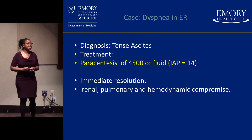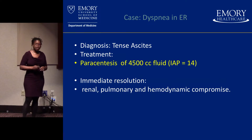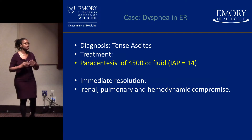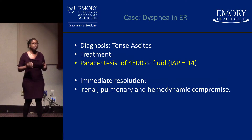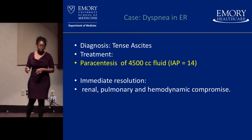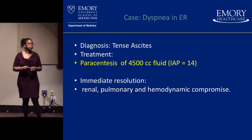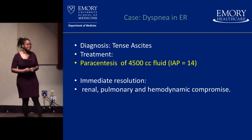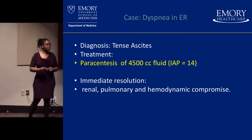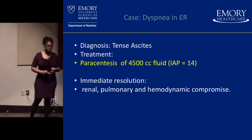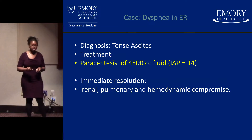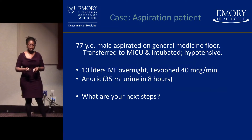This person has tense ascites. What is the treatment? A paracentesis. Let's get that fluid off — let's try to remove that extra pressure. We have a problem, and we can treat it. We take off 4,500 cc, and the pressures go down to 14. Everybody breathes a sigh of relief, and there's immediate resolution. The renal status, pulmonary, and hemodynamic compromise resolves. Everybody feels good about themselves.